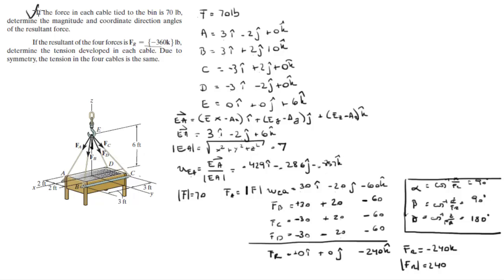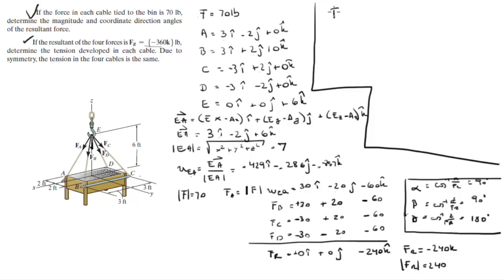That's the first problem. For the second problem, if the resultant force is −360k, what is the force developed in each cable? This is easy now. If F_R is −360k, each force contributes equally, so each cable's z-contribution is −360 ÷ 4 = −90k. Force A, for example, is Xi − Yj − 90k, where we know it's positive x and negative y.